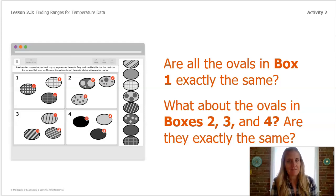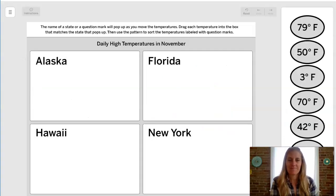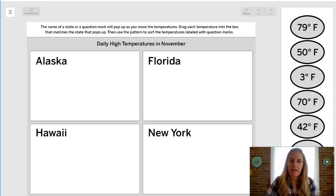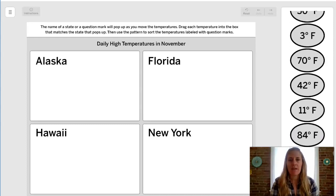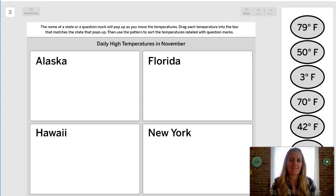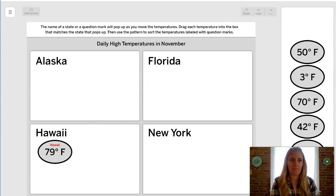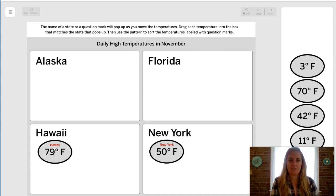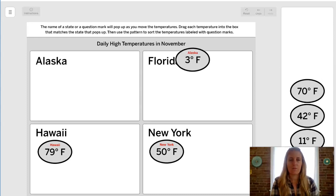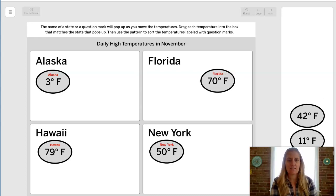Now we're going to try a similar activity, but this one has a range of temperature data, and the information that appears is either the name of a state or a question mark. Let's read our instructions first: the name of a state or question mark will pop up as you move the temperatures. Drag each temperature into the box that matches the state that pops up. Then use the pattern to sort the temperatures labeled with question marks. So let's try a few: 79 degrees Fahrenheit goes in Hawaii. 50 degrees Fahrenheit goes in New York. 3 degrees Fahrenheit goes in Alaska, and 70 goes in Florida.